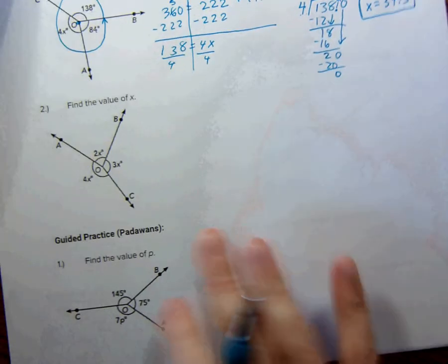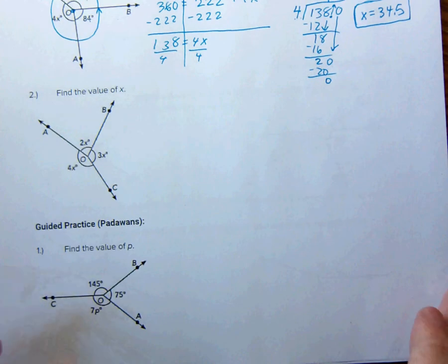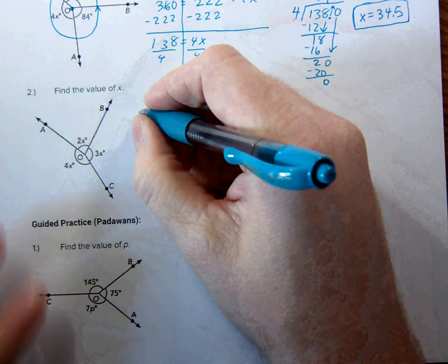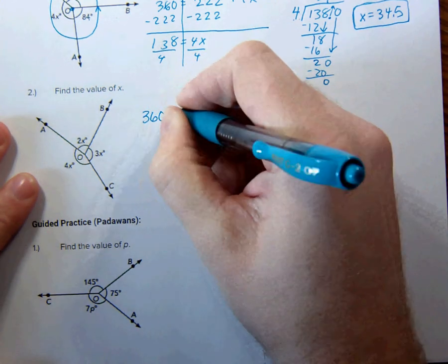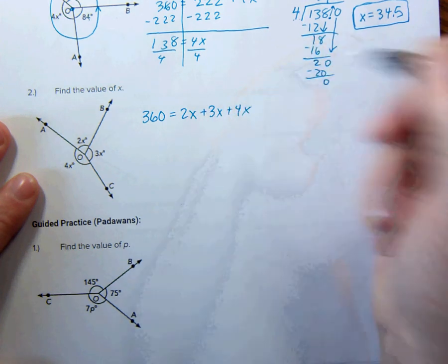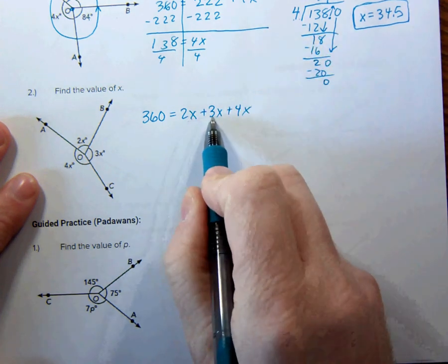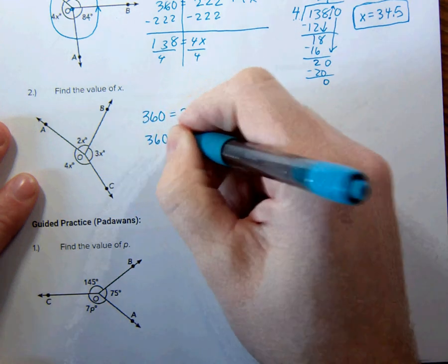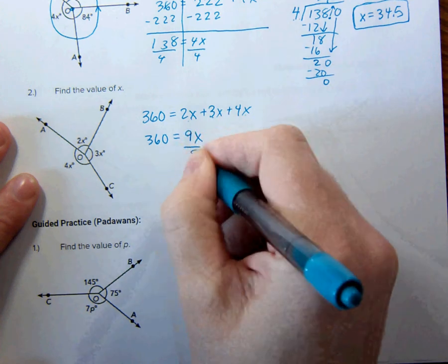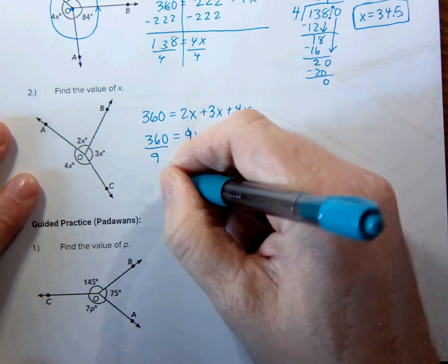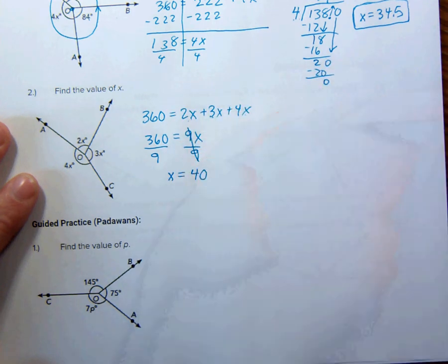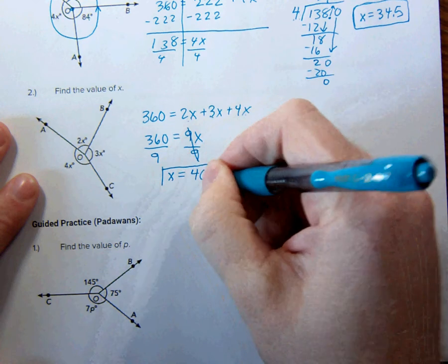Right here, find the value of x again. This time, this might actually be simpler. I have 3x's, 2x's, 4x's. So all the way around is 360 is equal to 2x plus 3x plus 4x. 2 plus 3 is 5 plus 4 is 9. So 360 is equal to 9x. Divide by 9. Divide by 9. X is equal to 360 divided by 9. Well, 36 divided by 9 is 4. So this is 40. Hooray!